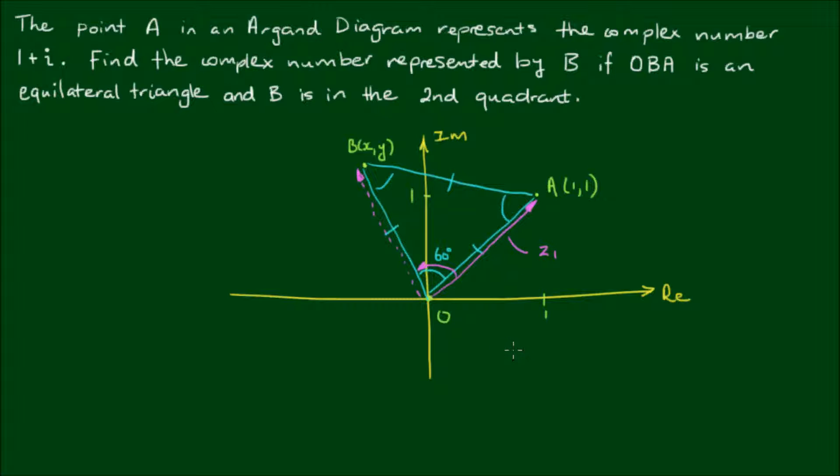So we've established before that when you multiply two complex numbers together, say Z1 multiplied by Z2, the result is equal to the modulus of Z1 times the modulus of Z2 by cis of the addition of their arguments or their angles.